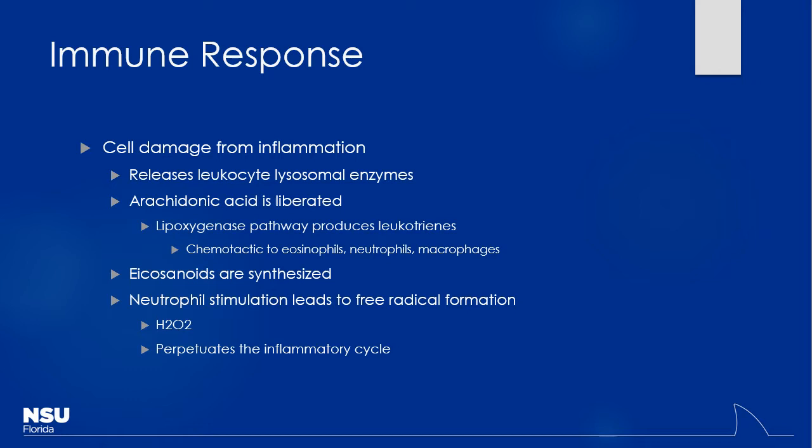Neutrophils are releasing H2O2 — hydrogen peroxide — which is very highly reactive. They generate free radicals, which can interfere with a lot of proteins and DNA. So we want to try to avoid that as best we can.